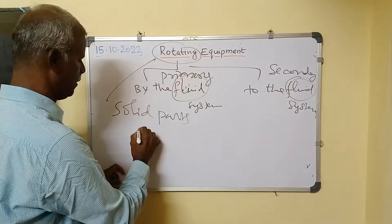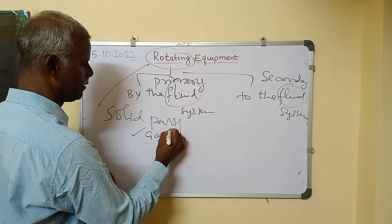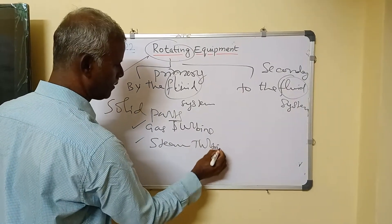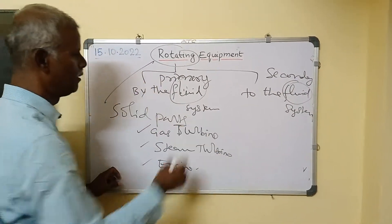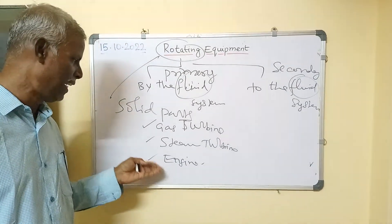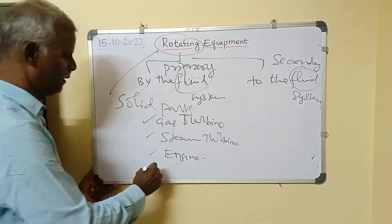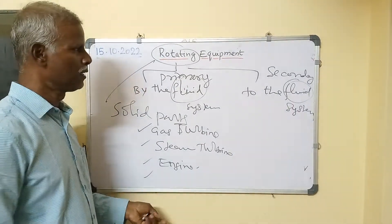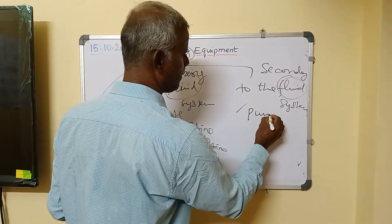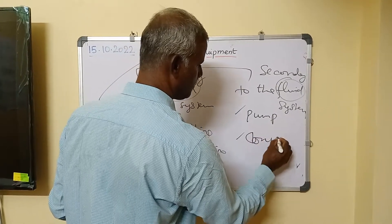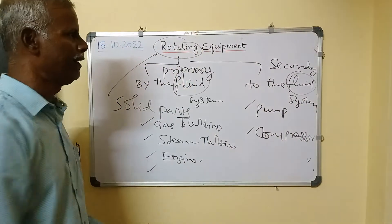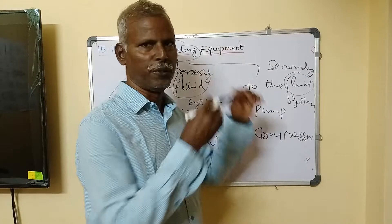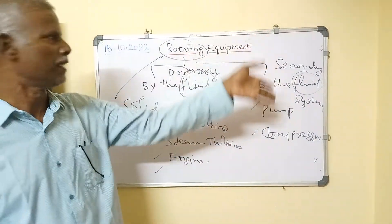Examples of primary rotating equipment: gas turbine, steam turbine, engines — which are consumed by oils, petrol, diesel, or gas — as well as wind turbines and water turbines. These all come under primary equipment. Pumps and compressors are examples of secondary equipment — they are run by fluid power and in turn run the fluid. This is the difference between primary and secondary rotating equipment.